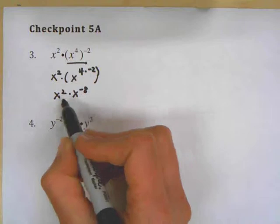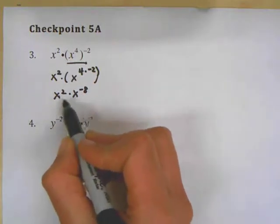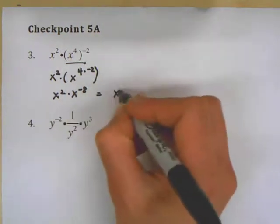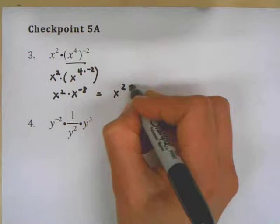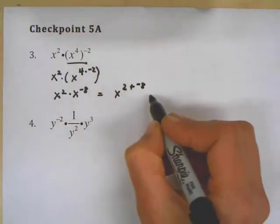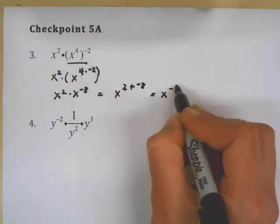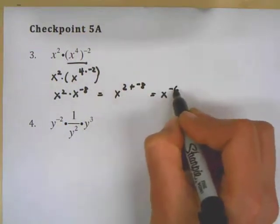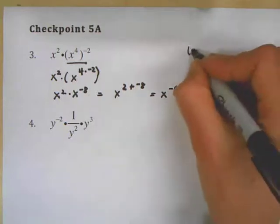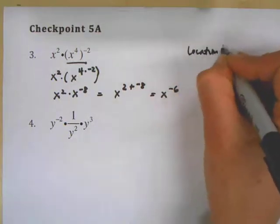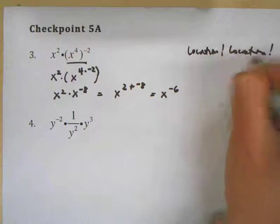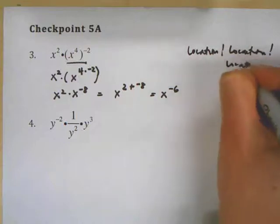And then when you have exponents multiplied this way, you add the exponents. So this is x to the second plus negative 8, which becomes x to the negative 6. Once again, the other thing with negative exponents is — as I like to say — it's location, location, location.